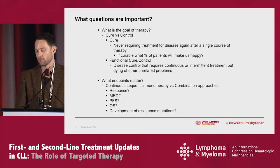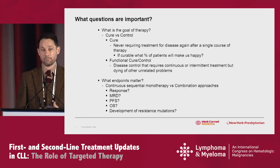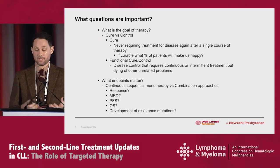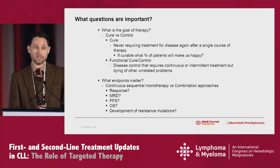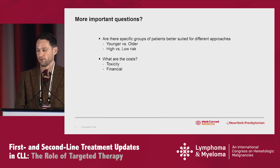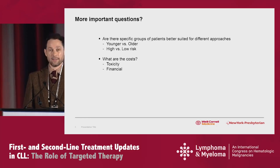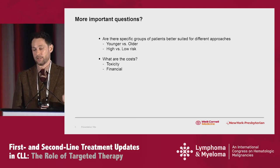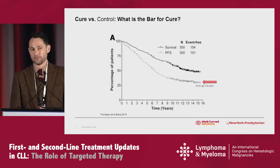What is our goal of treatment? What endpoints matter when studying this — continual sequential monotherapy versus combination fixed-duration response-adapted? Does response matter? What's important now: MRD, PFS, overall survival, resistance mutations? Are there specific subgroups better suited to different approaches — younger versus older patients, high versus low molecular risk? And what are the costs? There are financial costs and toxicity costs by adding on novel agents — we'll try to address all of those.